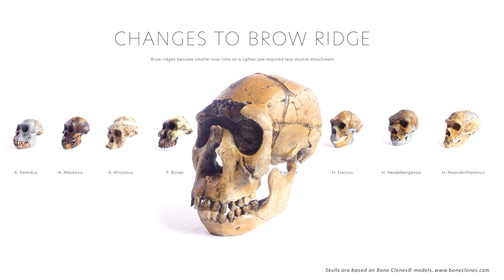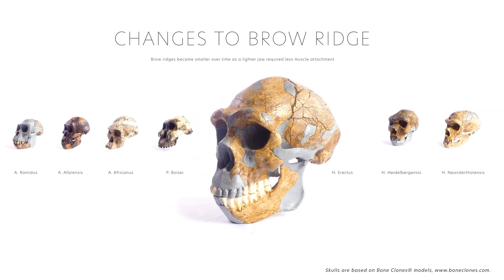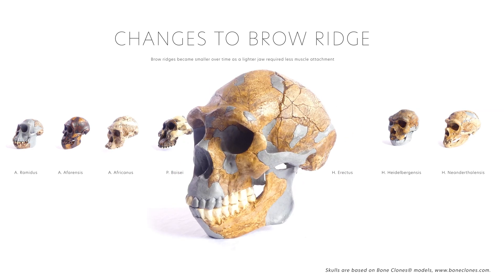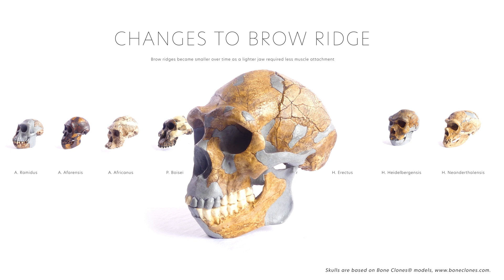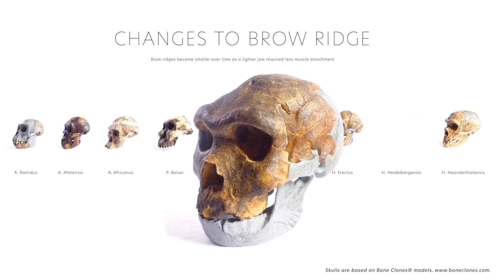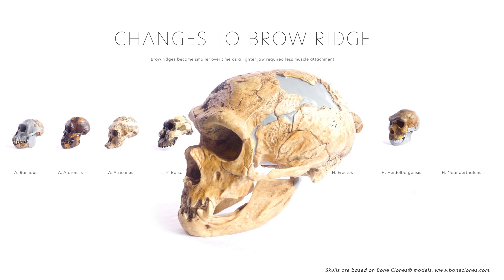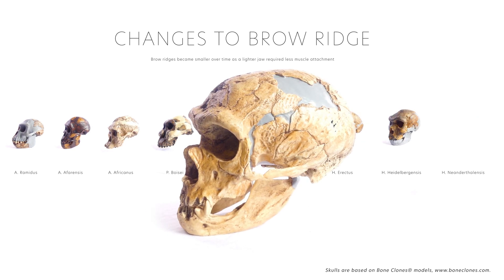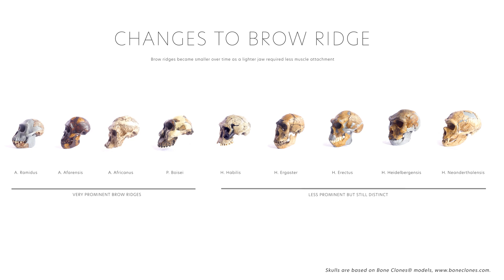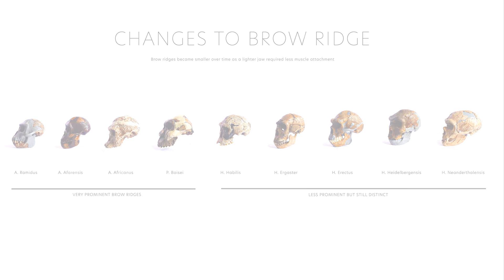Notably, this was one of the last features to diminish, as even Homo neanderthalensis had significant brow ridges compared to Homo sapiens. Very prominent brow ridges can be seen in the earlier hominins.